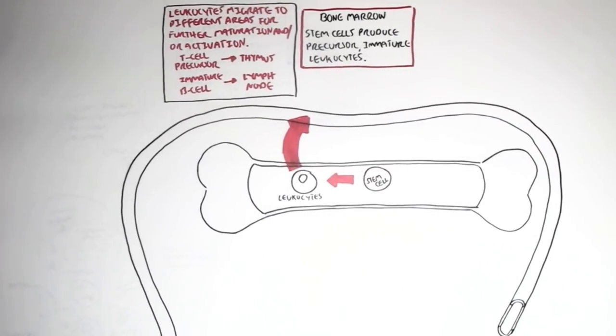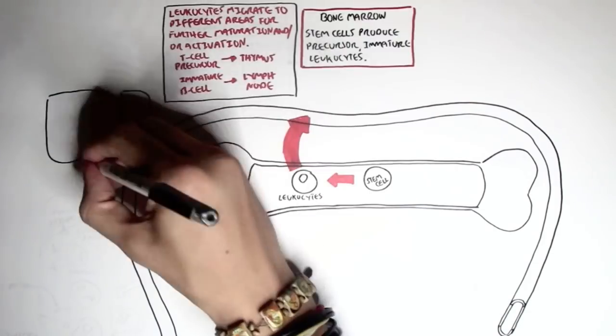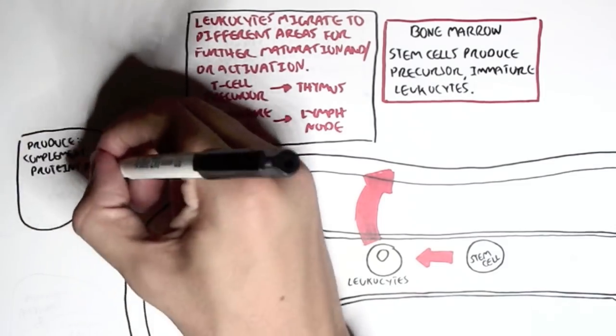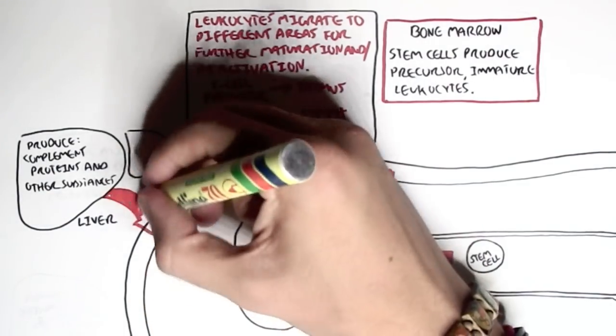And then in part 2, we looked at the different organs and tissues within the immune system, and how the different leukocytes migrate or move into these different tissues. The liver, as we have learnt, produces important substances for the immune system.